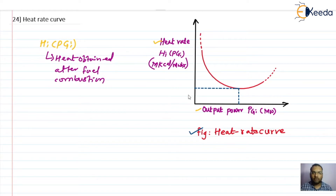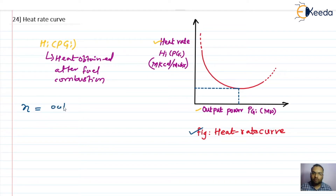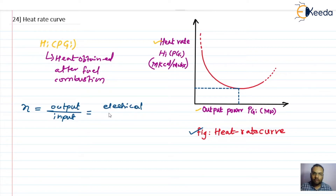Since we are doing it experimentally, whatever graph we obtain will be an approximate graph. Now, the efficiency of any generator is of course output divided by input. The output here is the electrical energy generated, and the input is the heat energy.